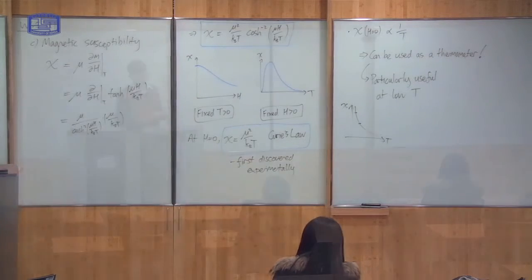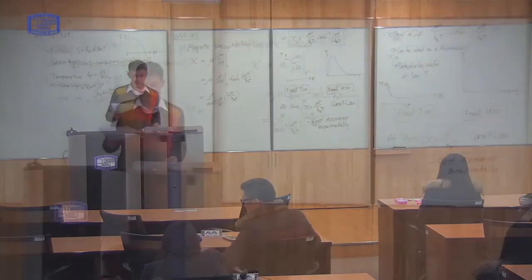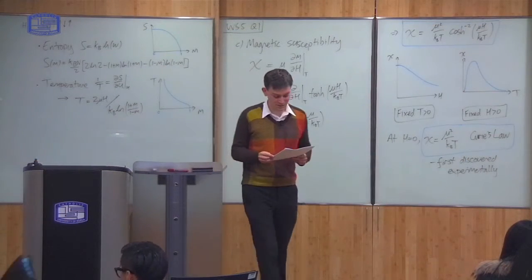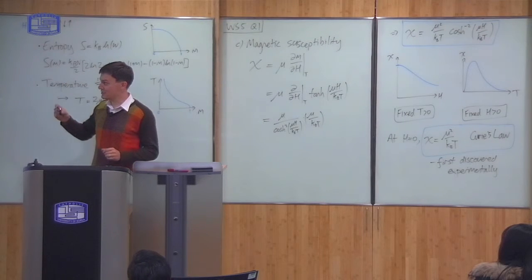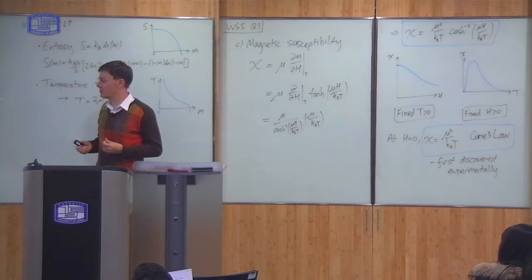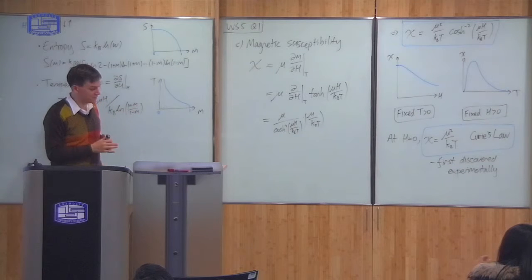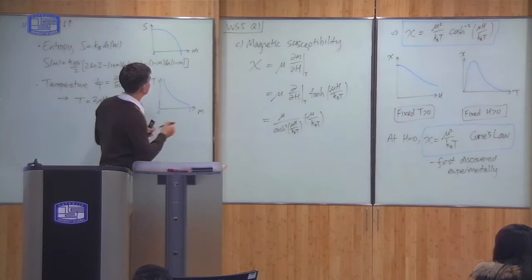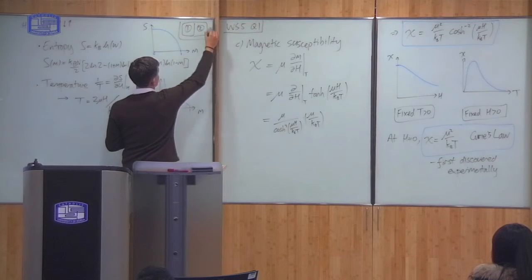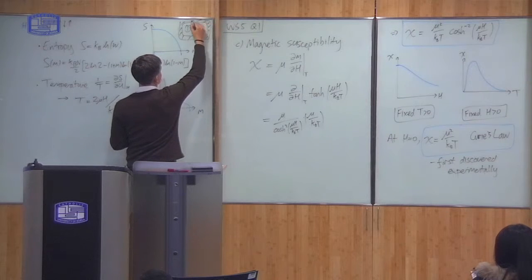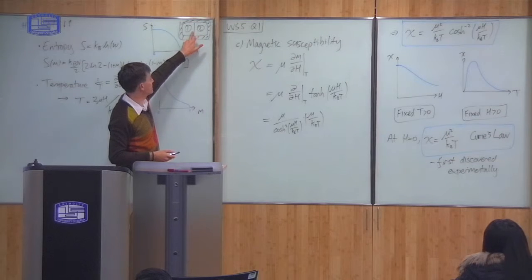The last thing I want to do today is show a simulation. This looks at the paramagnet again but uses a computer to run a simulation. I want to show how we can use these ideas from statistical mechanics to look at the interaction between two systems — we take two systems, join them together, and see how they interact. We can now consider a simple example where both systems are paramagnets.